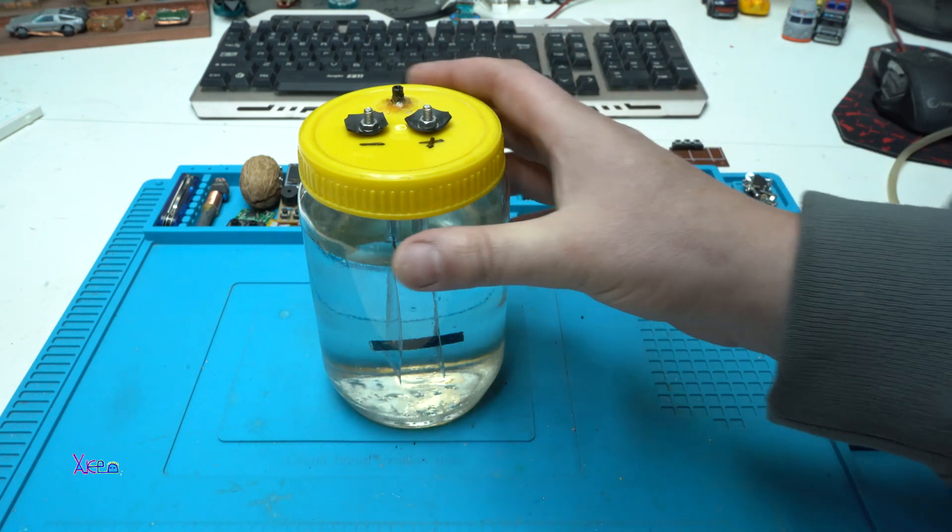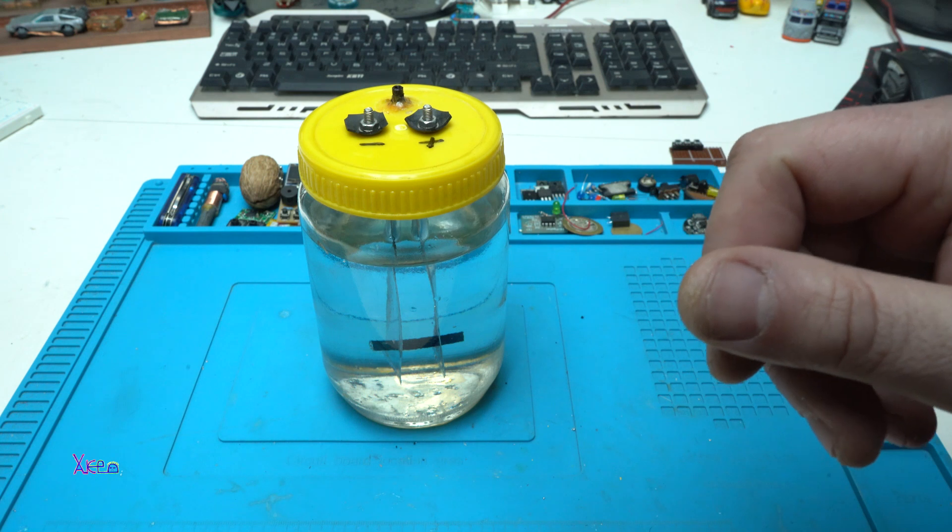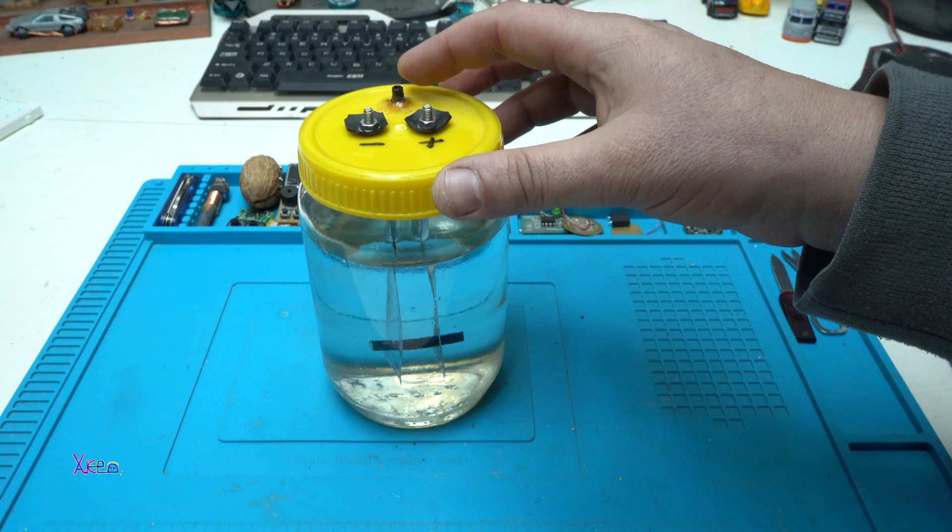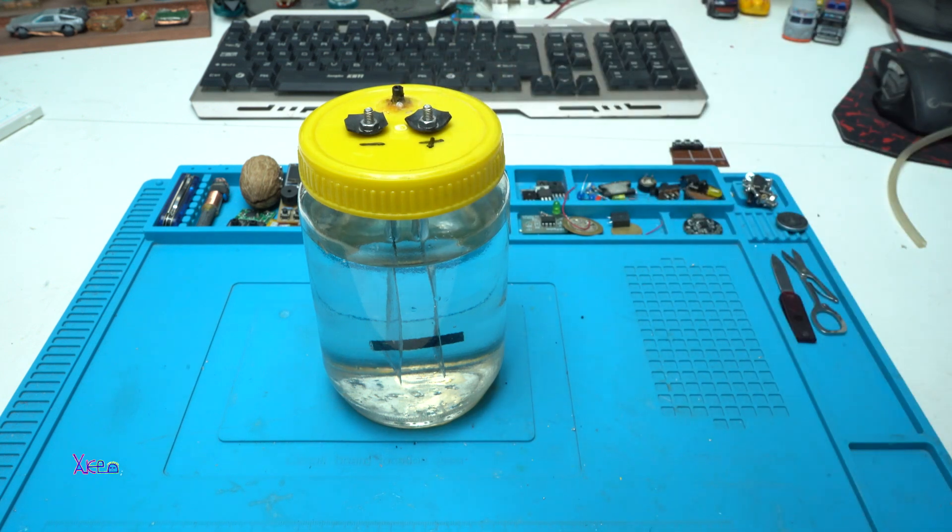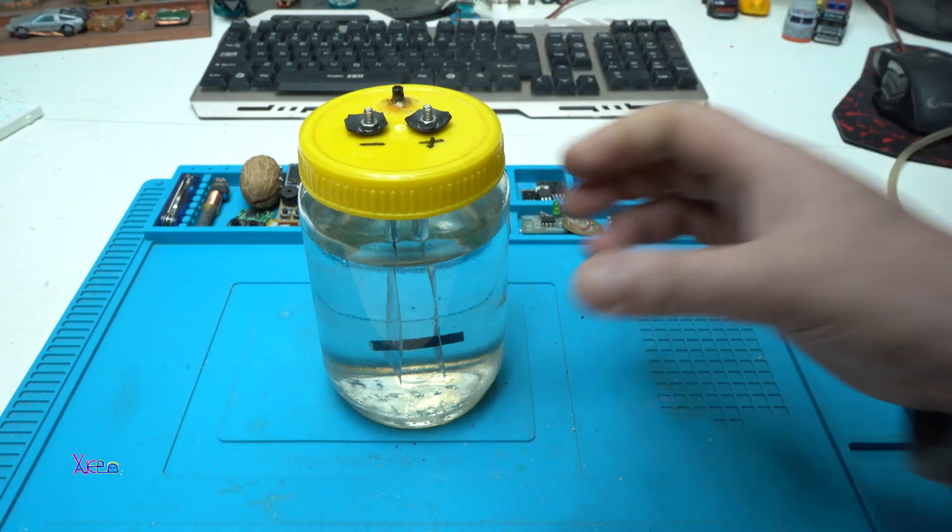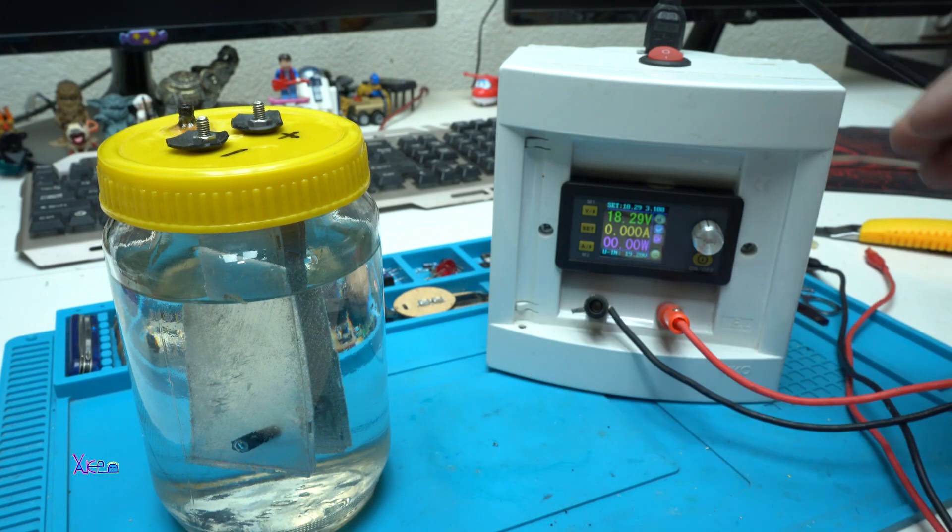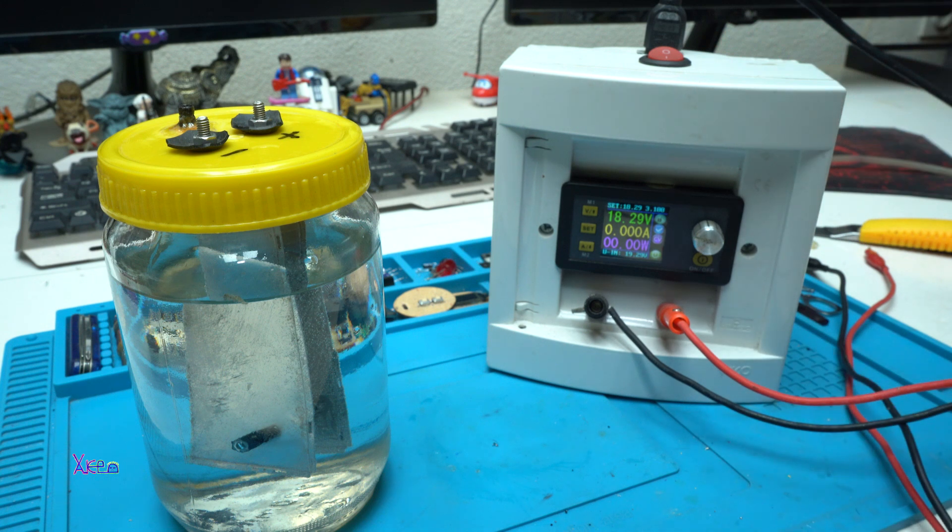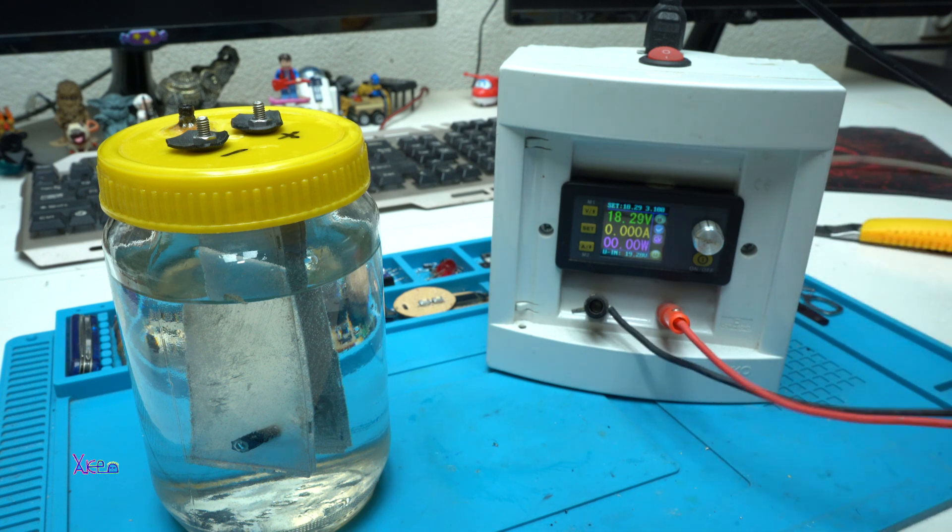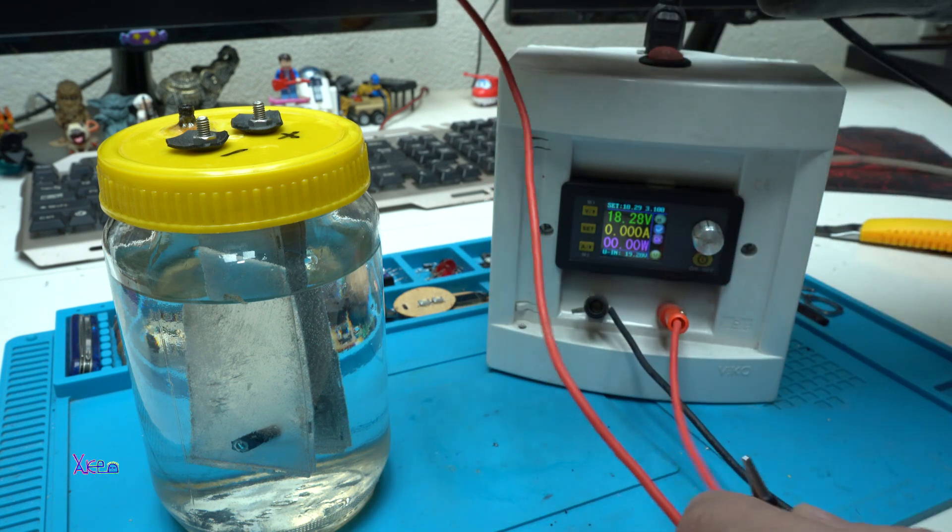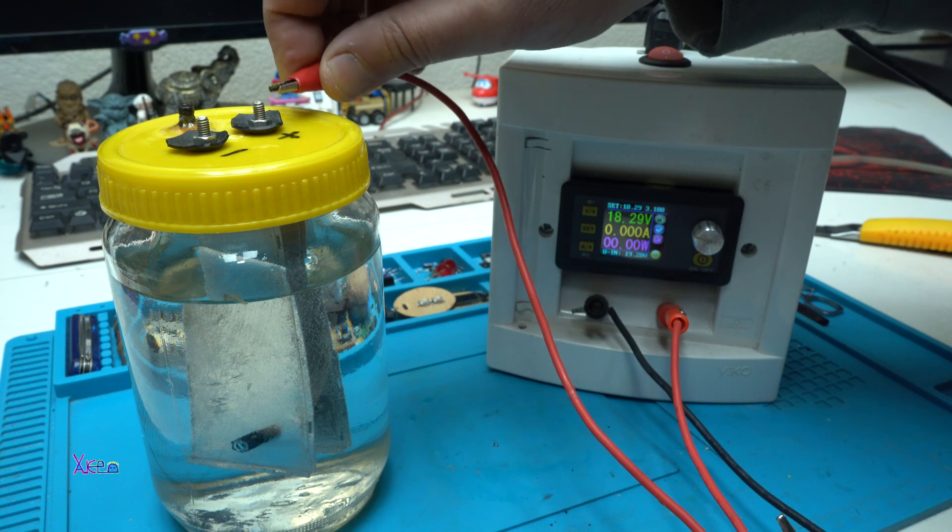Now I'm gonna try it. I'm gonna apply a voltage to the terminals, positive and negative. And here I have outlet for the gases. And see how it will work. Here I have a power supply that can give maximum of 18 volts and 3 amps maximum. And see what happens. How much current will pull this HHO generator?